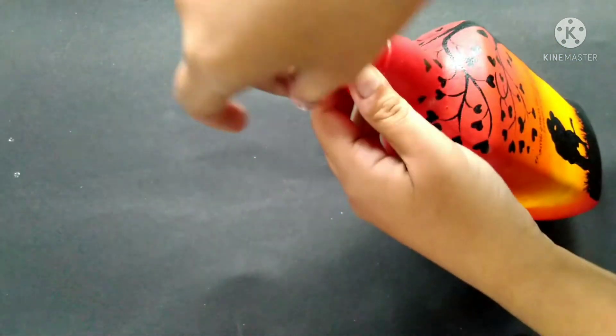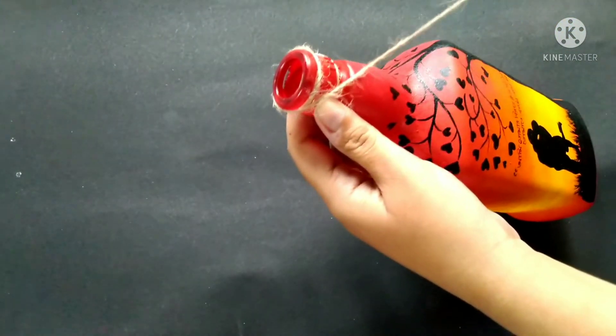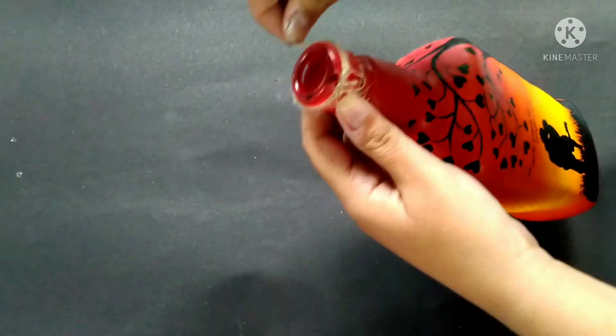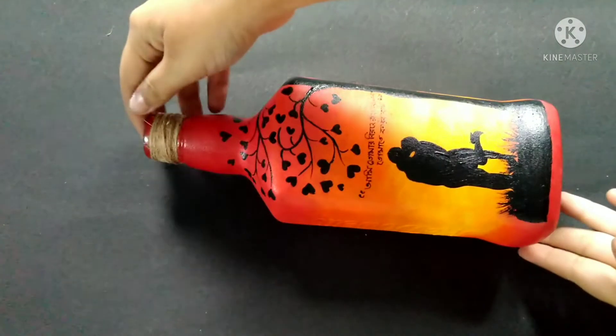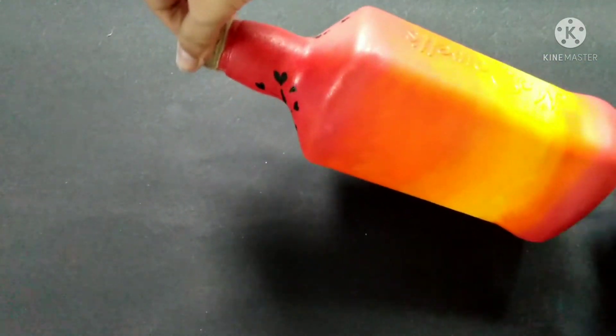Wrapping jute cord around its neck and fix it with favicol. You can use any kind of glue to fix this. And my bottle is ready and this is the final look.